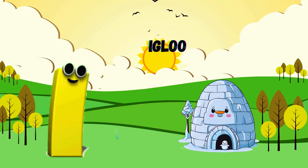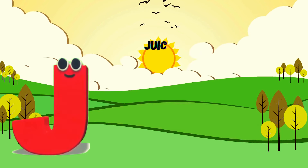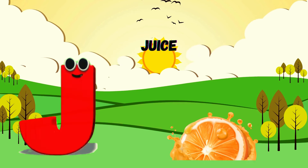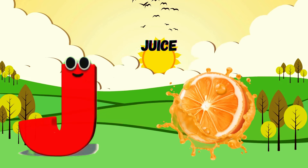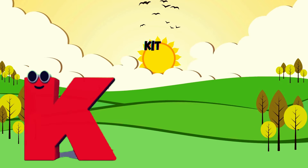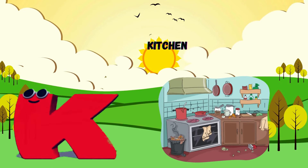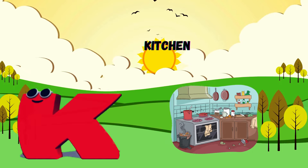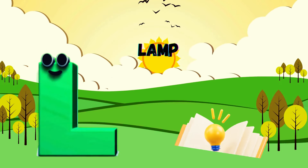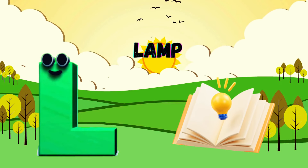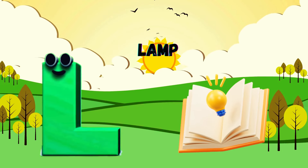I is for Igloo. I, I. Igloo. J is for Juice. J, J. Juice. K is for Kitten. K, K. Kitten. L is for Lamb. L, L. Lamb.